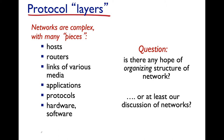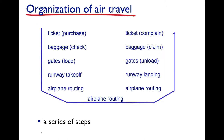Systems in the Internet are organized in a series of layers. In the book, they use the analogy of the organization of air travel. You have different functions such as ticketing, baggage, gates, the runway, and the routing of the airplane between control towers along the route between the source city and the destination city.